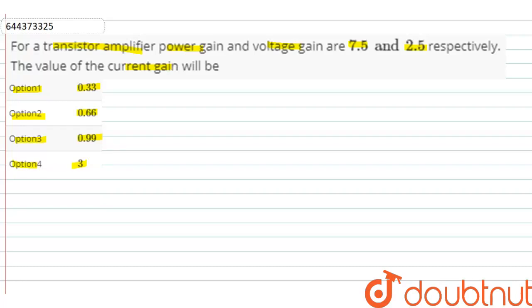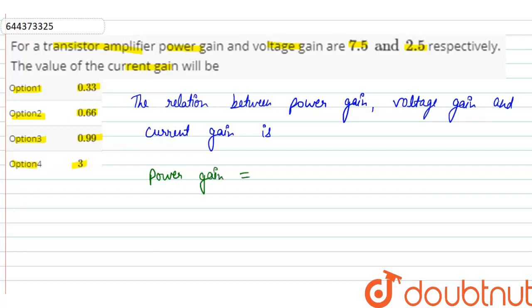We know the relation between power gain, voltage gain, and current gain. Power gain is equal to voltage gain times current gain.